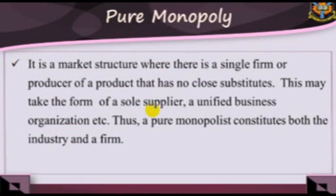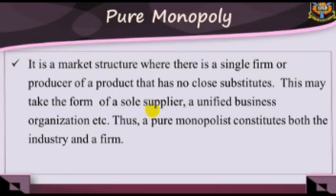Pure monopoly. It is a market structure where there is a single firm or producer of a product that has no close substitute. This may take the form of a sole supplier or unified business organization. Thus, a pure monopolist constitutes both the industry and a firm.